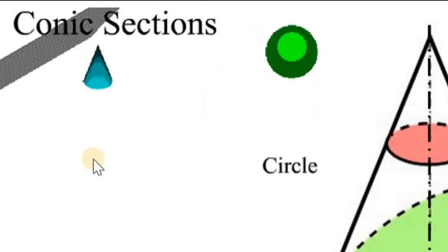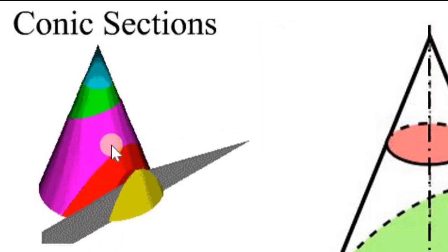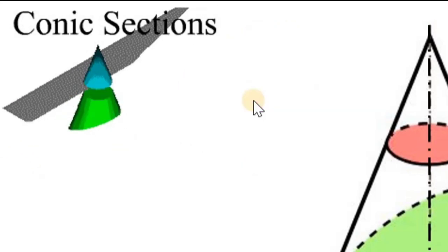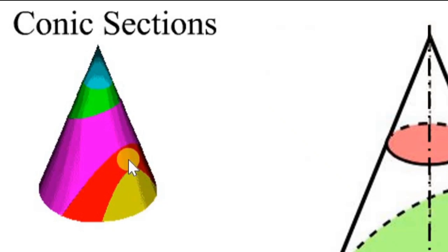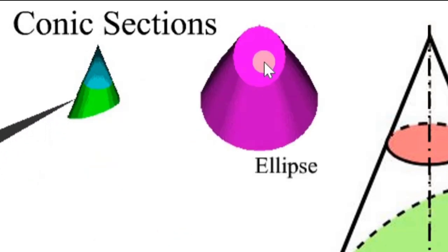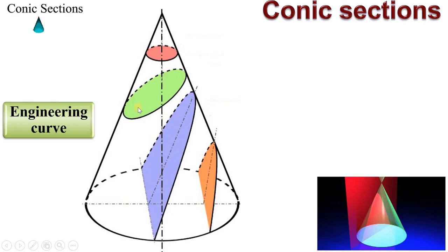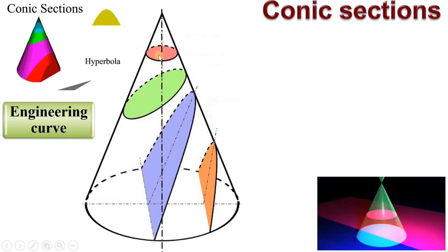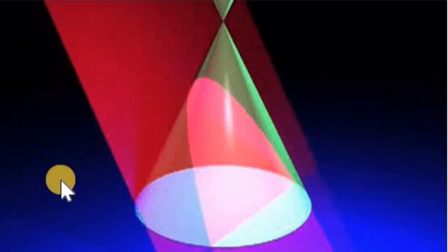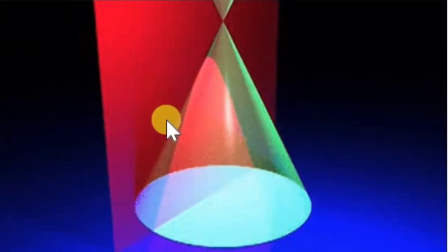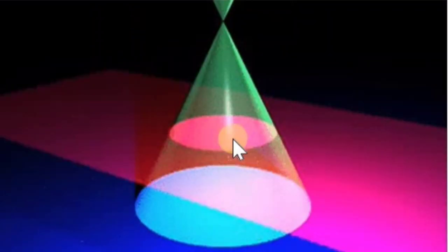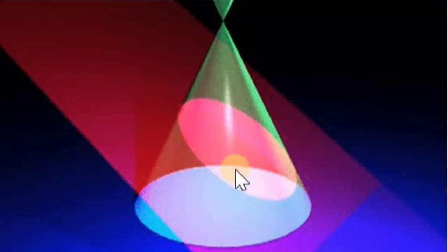If you cut the cone with different positions of the cutting plane, then you will get different shapes. Here you can see hyperbola, parabola, ellipse, and circle. In this figure also you can see that if you cut with a different position of the cutting plane, then you will get different engineering curves.